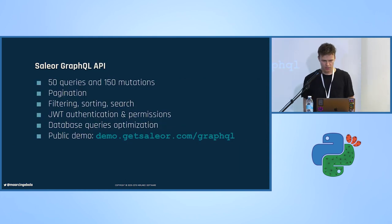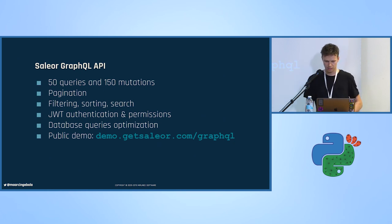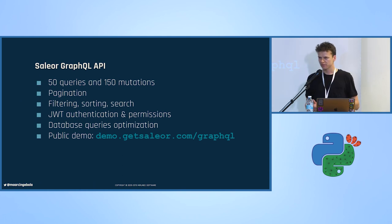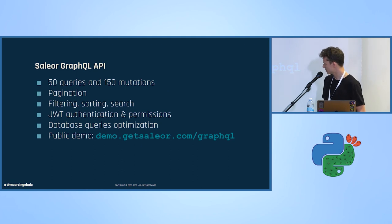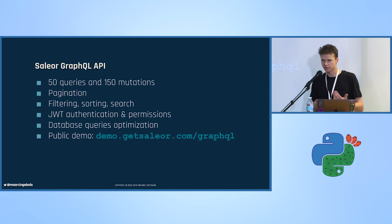Quickly about the API itself: we have 50 queries and 150 mutations right now, so it's a fairly large API. We have features such as pagination, filtering, sorting, search capabilities, JSON web token authentication, permissions management, and database query optimization — I'll talk about that later. There is also a public demo at demo.getsaleor.com/graphql where you can play with it. It's read-only, so you can see what operations are available, fetch some example data and explore.